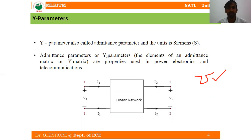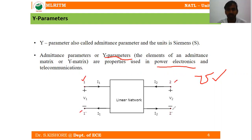The major applications of admittance parameters are in power electronics and telecommunication. To derive expressions for two-port network admittance parameters, consider a linear two-port network with ports 1-1' and 2-2'. The input port has variables I1 and V1, and the output port has variables I2 and V2.